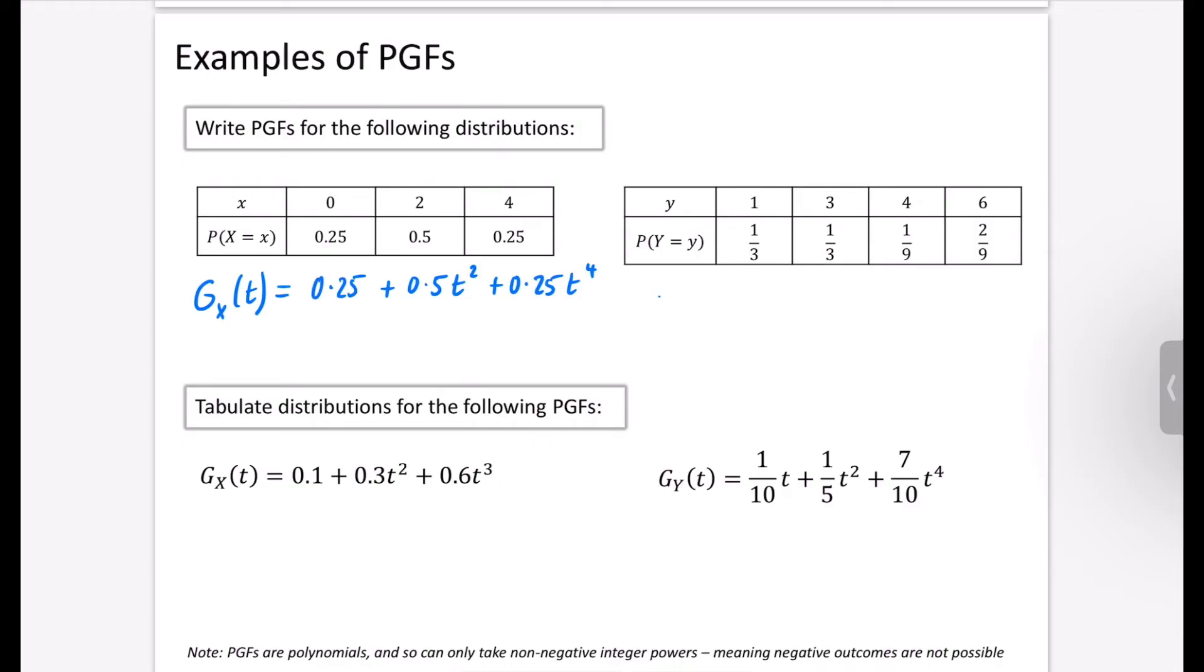Okay, so it is g this time. It's going to generate the discrete random variable y. So I'm going to say that it is y, and I'm going to put in brackets t still. Now the outcome is just 1, so it's going to be a third t to the power of 1 plus a third t cubed plus a ninth t to the power of 4 plus two ninths t to the power of 6. So you can see it doesn't have to include all of the outcomes. It just has to have all the ones that have a probability with them.